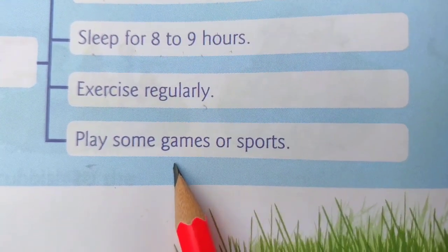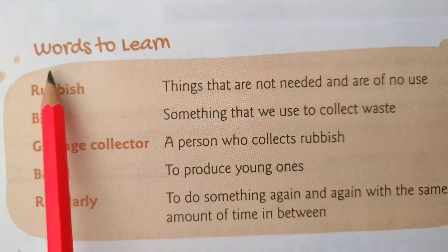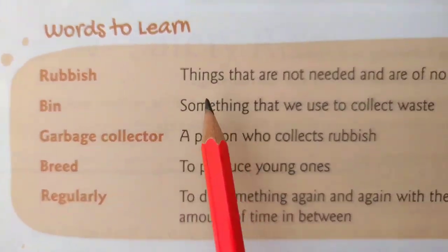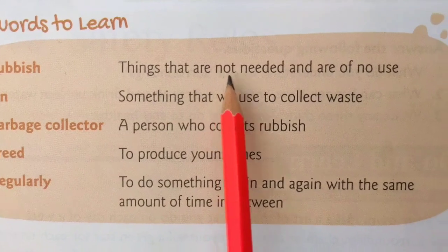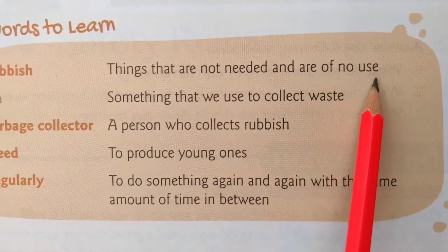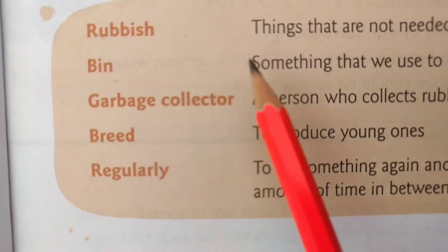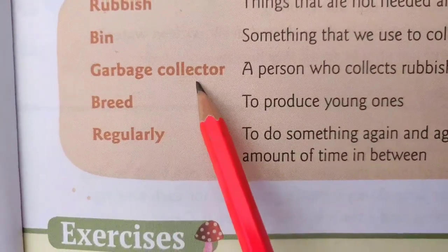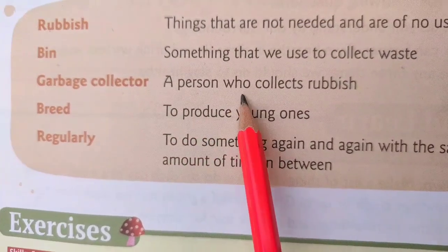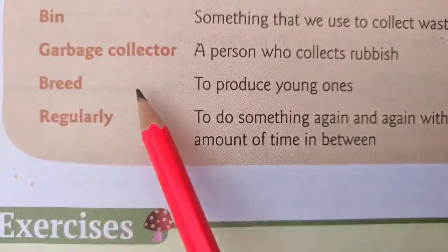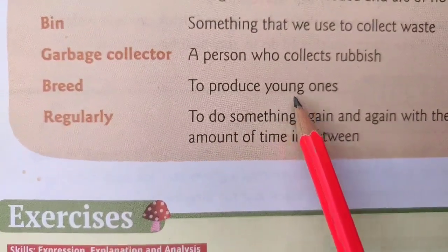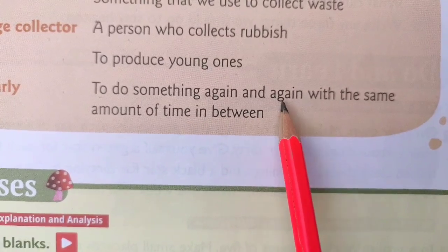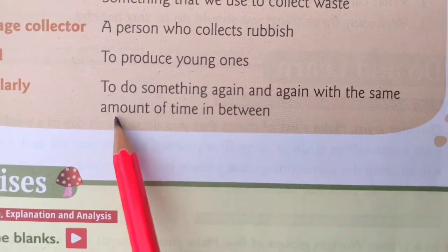Words to learn: Rubbish means things that are not needed and are of no use. Bin means something that we use to collect waste. Garbage collector means a person who collects rubbish. Breed means to produce young ones. Regularly means to do something again and again with the same amount of time in between.